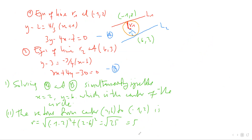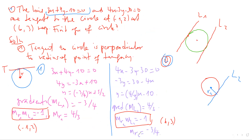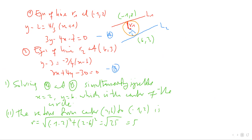Now we can write the equation of the line for radius R1 — because we know the gradient and a point, which is the point of tangency. Similarly, because we know the point of tangency for Line 2, we can write the equation for radius R2. The point of tangency for Line 1 is (-1, 2), and the gradient of R1 is 4 over 3, giving the equation: 3y minus 4x minus 6y minus 7 equals 0.